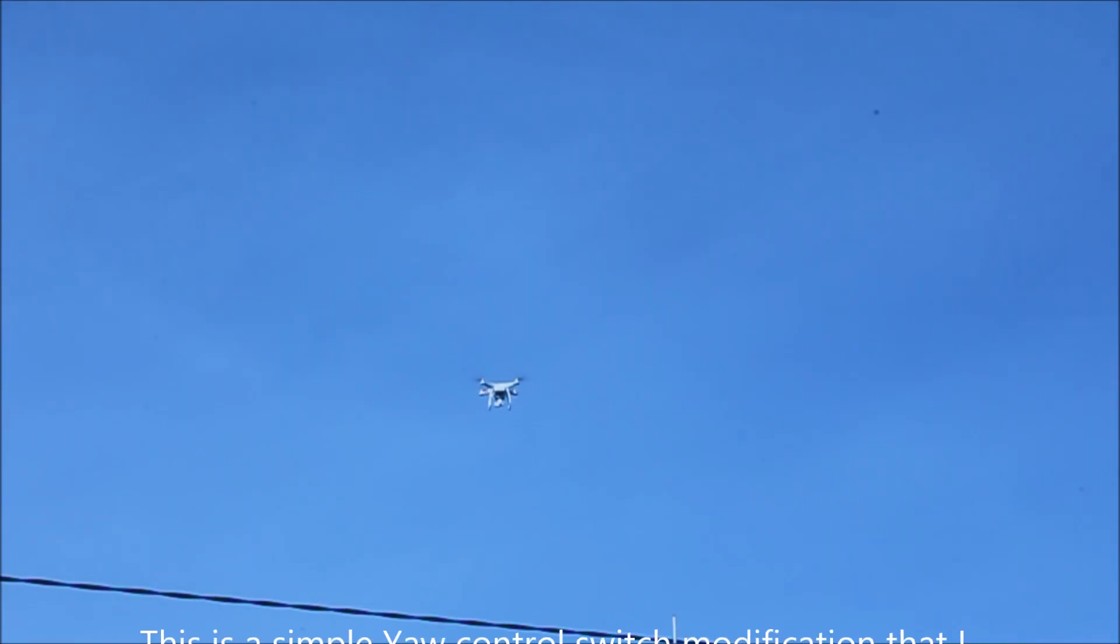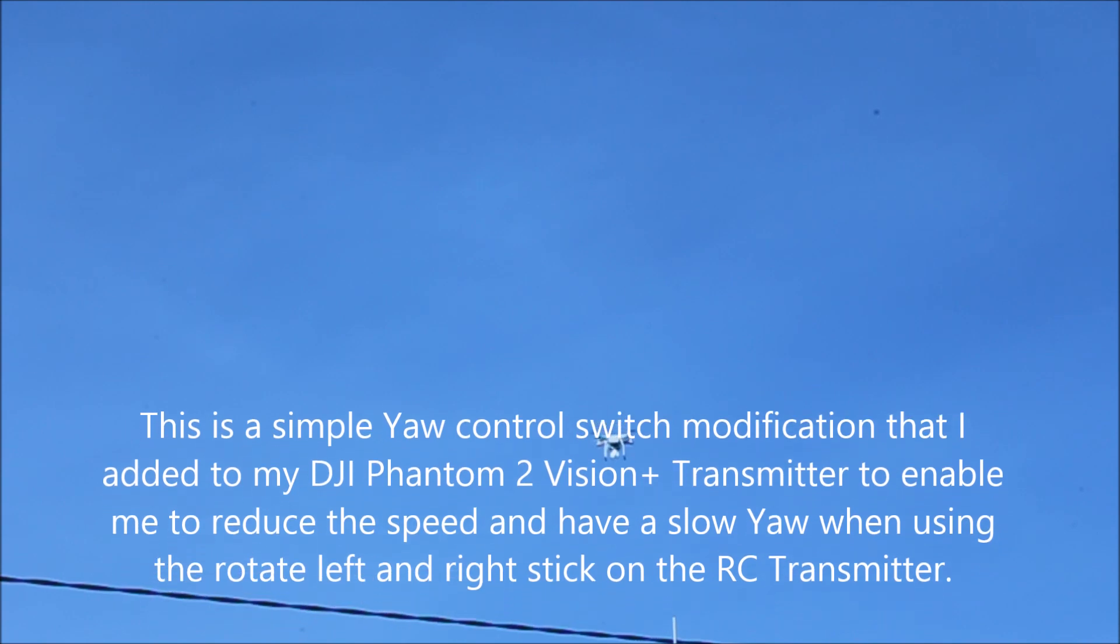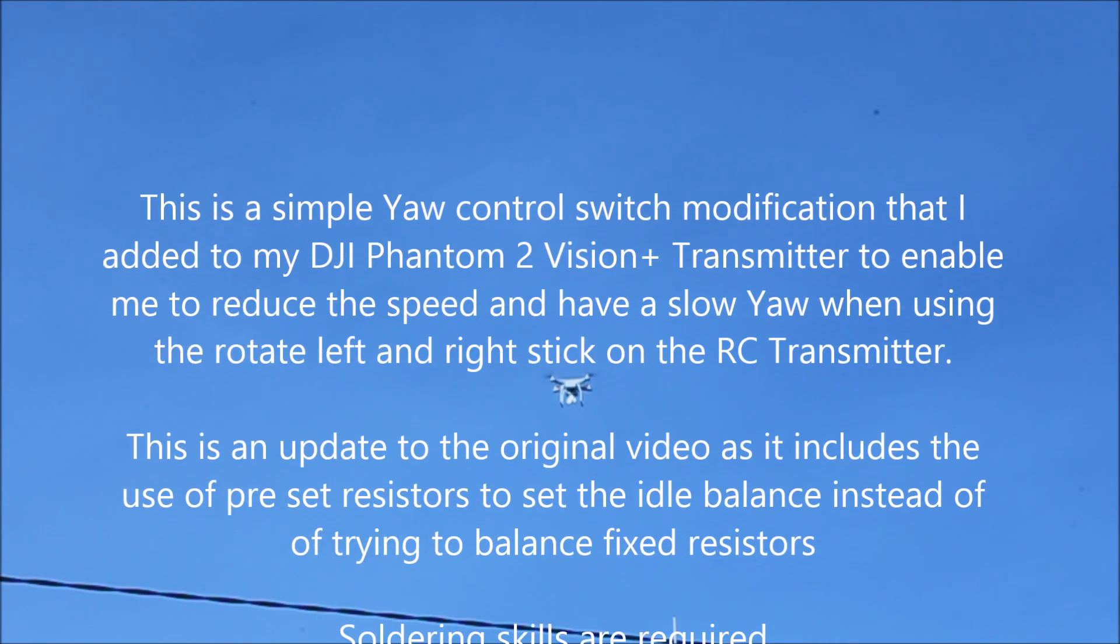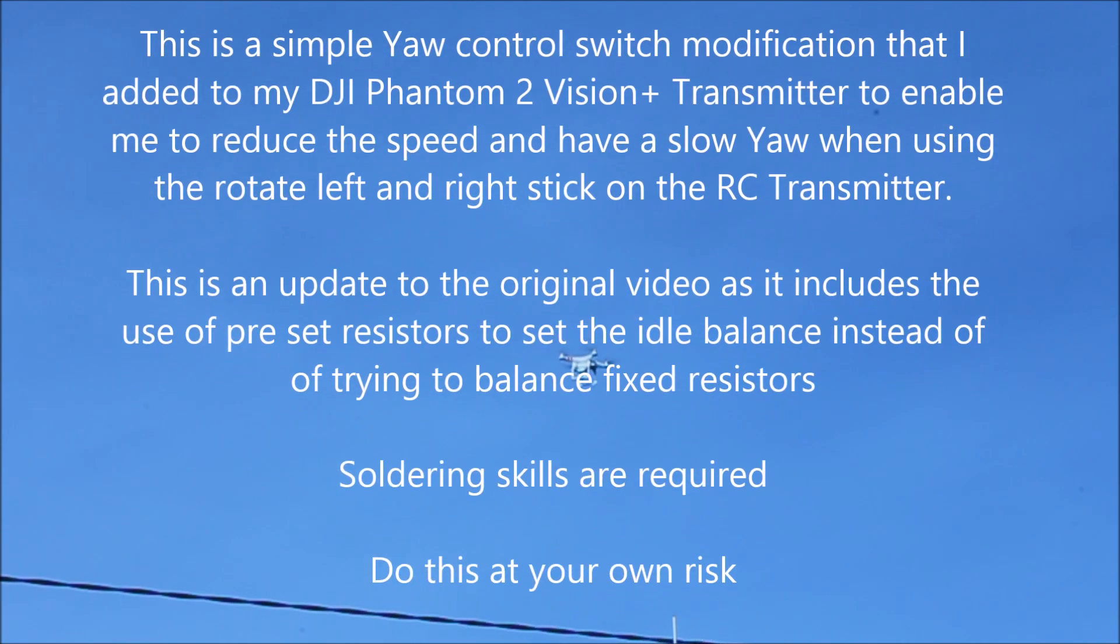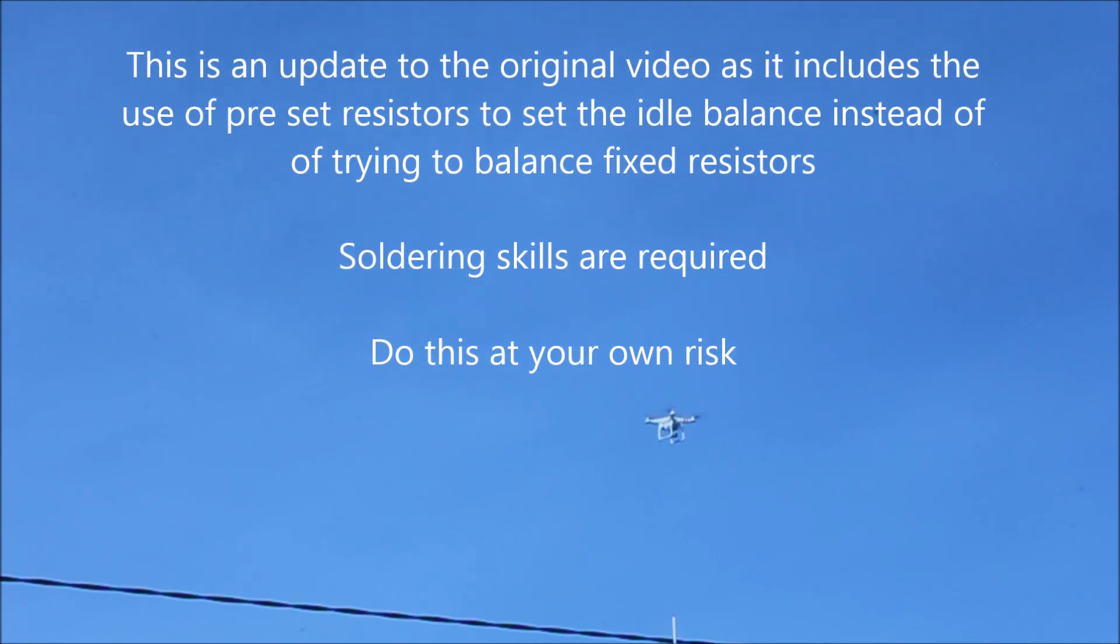This is a simple yaw control switch modification that I added to my DJI Phantom 2 Vision Plus transmitter to enable me to reduce the speed and have a slow yaw when using the rotate left and right sticks on the radio control transmitter.